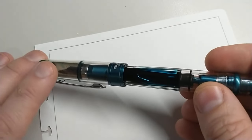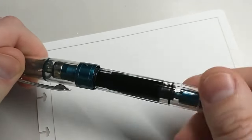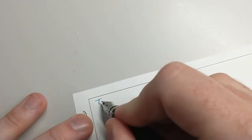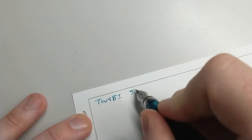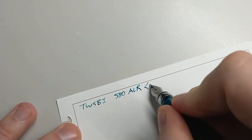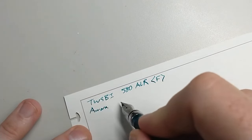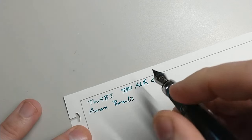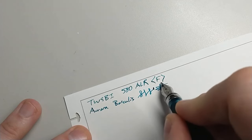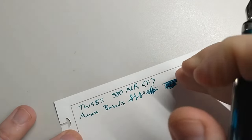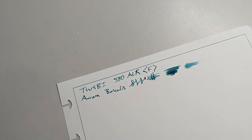This TWSBI 580 ALR — it just has such a huge ink capacity that I haven't been able to put new ink in it for a little while. This is in a fine nib, and the ink is Diamine Aurora Borealis. That doesn't scream fall, but it's a beautiful color, wonderful ink, great pen. I tend to keep it inked up a lot because of the huge capacity.